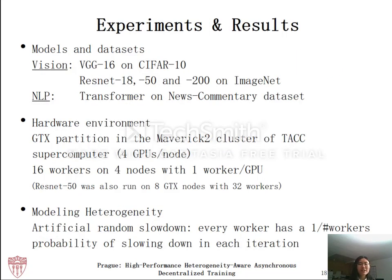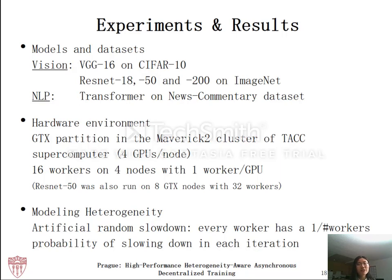We tested all designs on various computer vision models and one NLP model. The experiments were conducted on the TACC supercomputer. All models were run using 16 workers on four GTX nodes with one worker per GPU. For ResNet-50 on ImageNet, we also ran 32 workers on eight GTX nodes. To model heterogeneity, we injected artificial slowdown: for every worker in every iteration, there is a probability of one over the total number of workers of slowing down, so in expectation at any time there will be one slow worker.